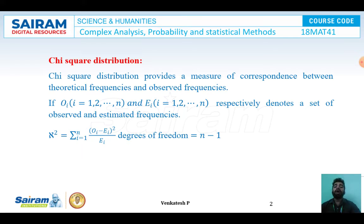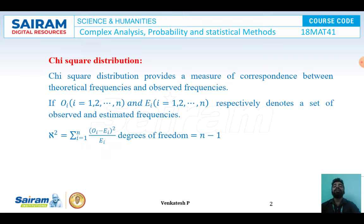If O_i, where i = 1, 2, ..., n is an observed frequency and E_i, where i = 1, 2, ..., n is an expected frequency, then the chi-square formula is given by: summation from i=1 to n of (O_i minus E_i) squared divided by E_i. Here, n minus 1 is the degree of freedom in chi-square distribution.